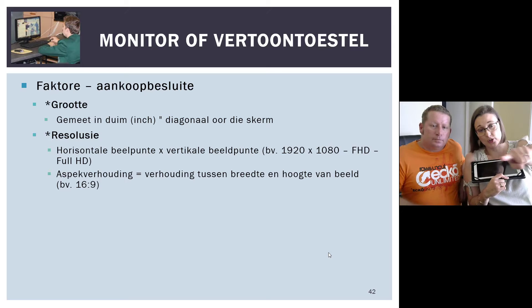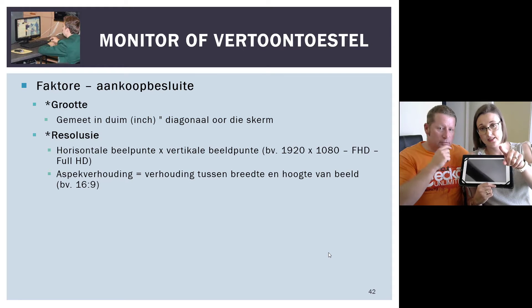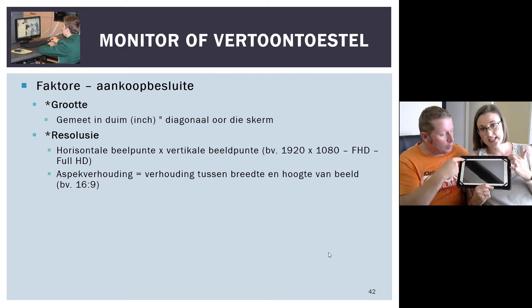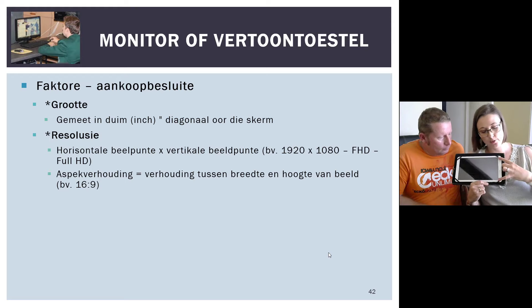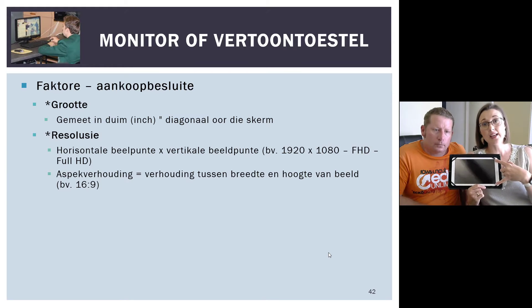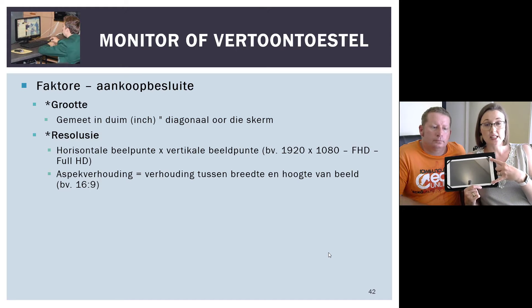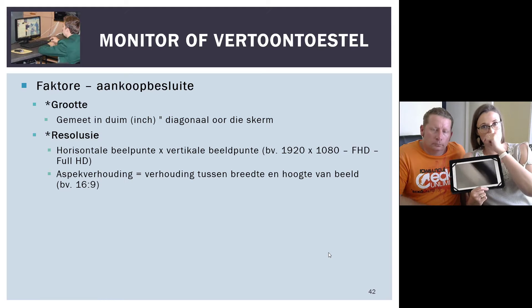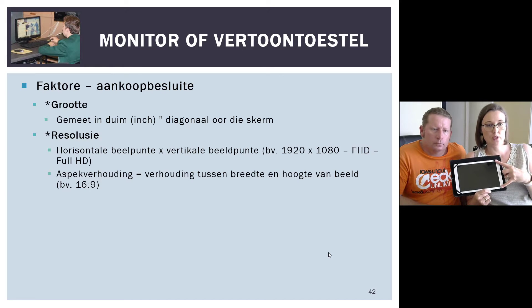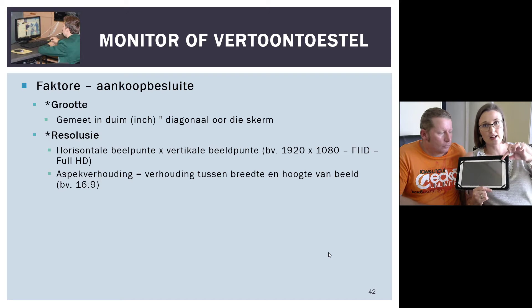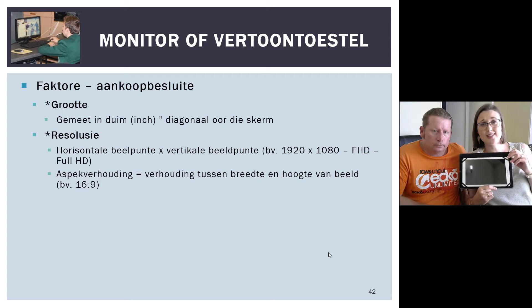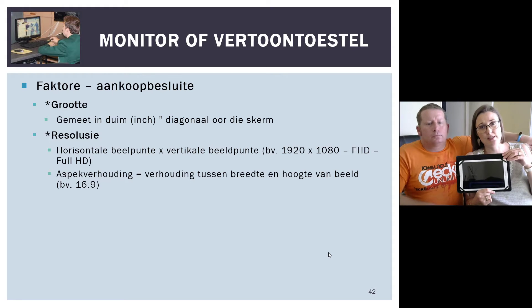So wat is 720? Die 720 verwys na jou breedte — so dit sal 1366 by 720 wees. Mens sal partykeer, as hulle net een getal noem, noem hulle die korste getal, en jy sit gewoonlik 'n 'p' by — so jy sal sê 1080p, of 720p. Dit is ook dieselfde getalle wat jy gebruik as jy in YouTube die kwaliteit stel. So as jy die kwaliteit stel van hoe groot die streaming size is — 240, 480 — dis die size. So, 2K — al wat dit eintlik beteken is dat hy meer as 2000 pixels het aan die bokant. So die oomblik as hy soos 2140 pixels het, dan tel dit eintlik as 2K. En 4K beteken dubbel dit — so as hy 4000-en-iets pixels hier aan die bokant het, dan is dit 4K.